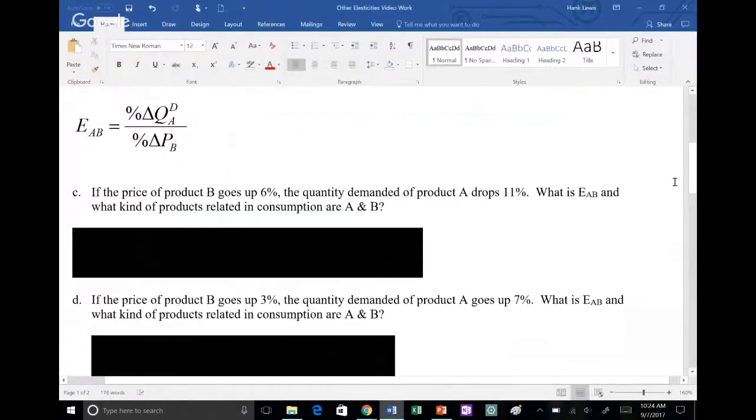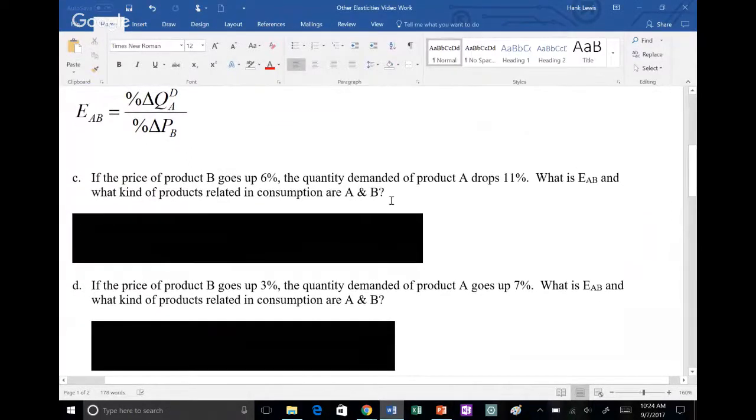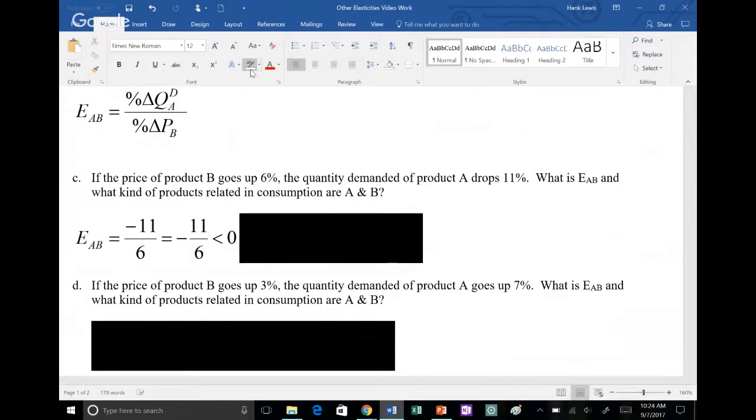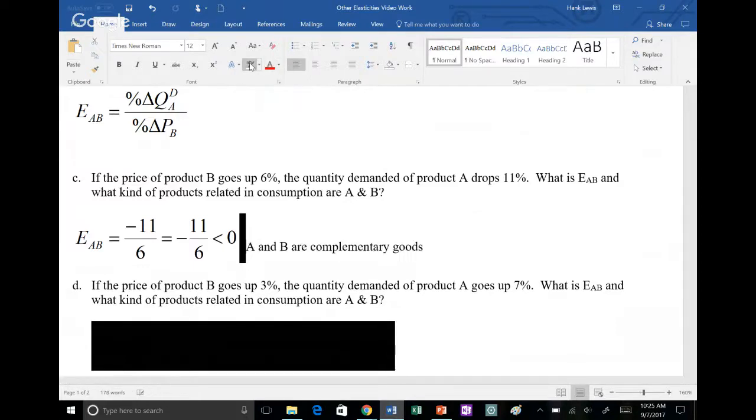Let's go over here to parts C and D, which are cross price elasticities of demand. If the price of product B goes up 6%, the quantity demanded of product A drops 11%. Is that 6 positive or negative? It goes up, that suggests positive. Is that 11 positive or negative? It goes down, that suggests negative. So we plug these in by putting the positive 6 on the bottom, the negative 11 up top. That doesn't reduce, we just move the negative to the front. That's negative 11 over 6. A negative E sub AB indicates how are these products related in consumption? Price of B goes up, people buy less of A. That means A and B are used together. They are called complementary goods.